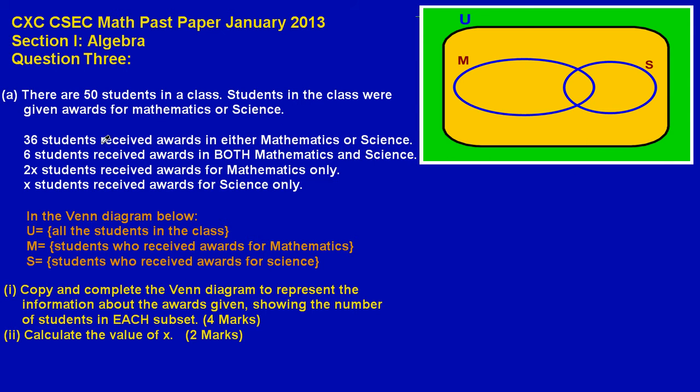Nice having you again my friends. In this video we're going to be looking at the solution to question 3, a typical sets question on the January 2013 CXC paper. In part a, there are 50 students in a class. Students in the class were given awards for mathematics or science. Now quickly we could make some quick set notation as we go along to make this a lot simpler.